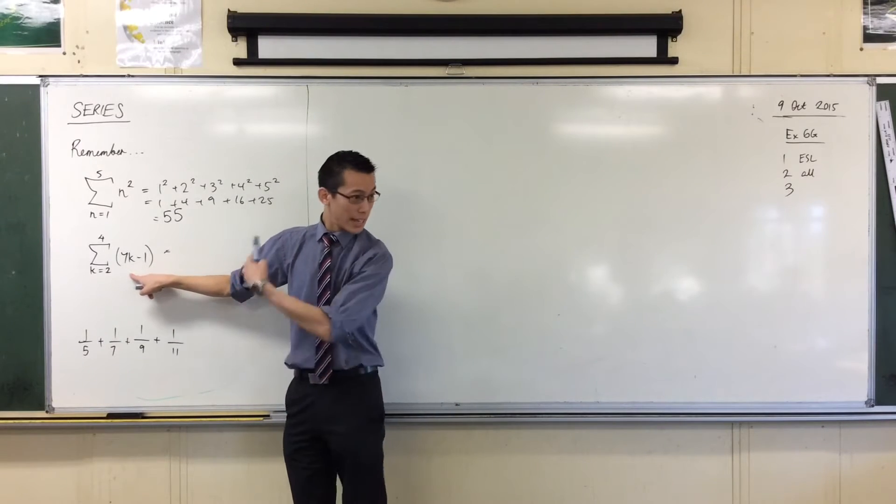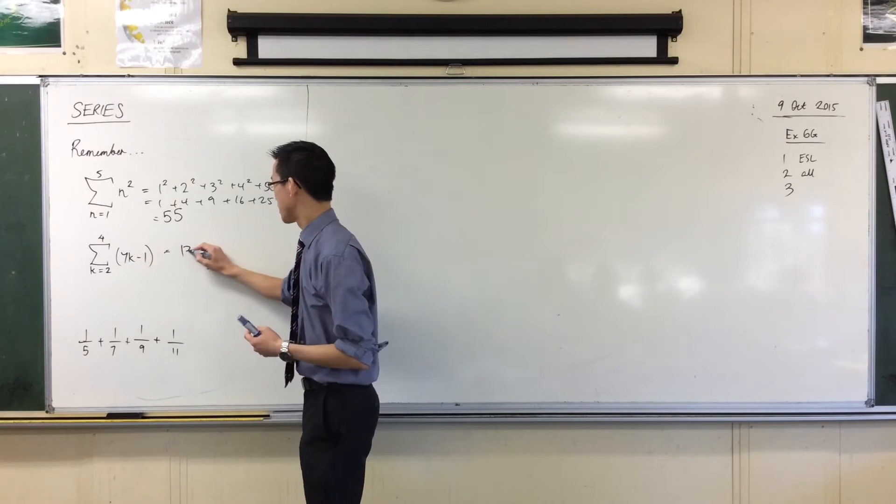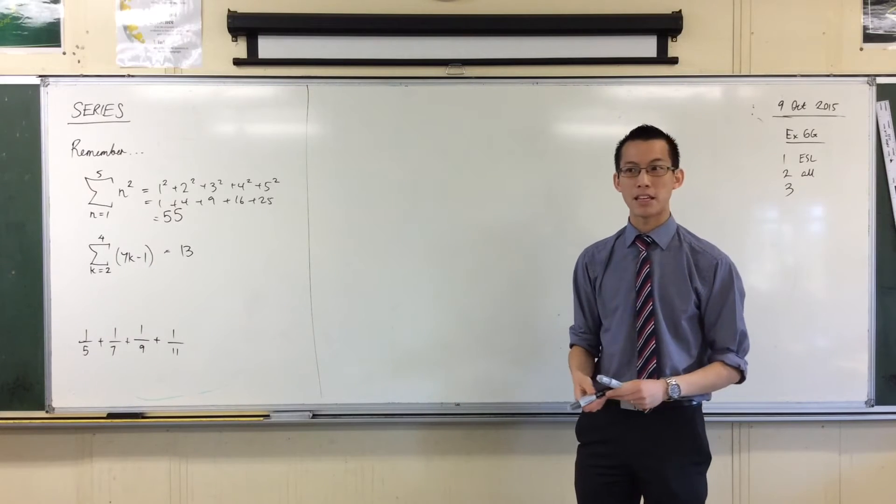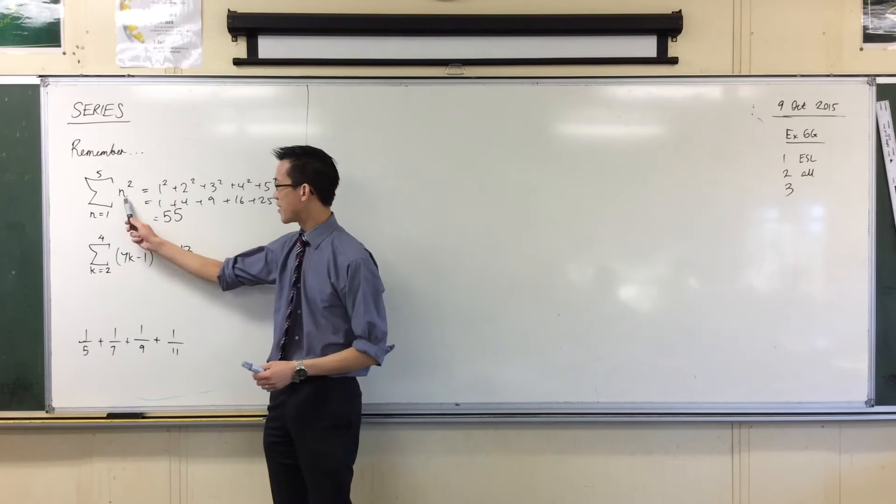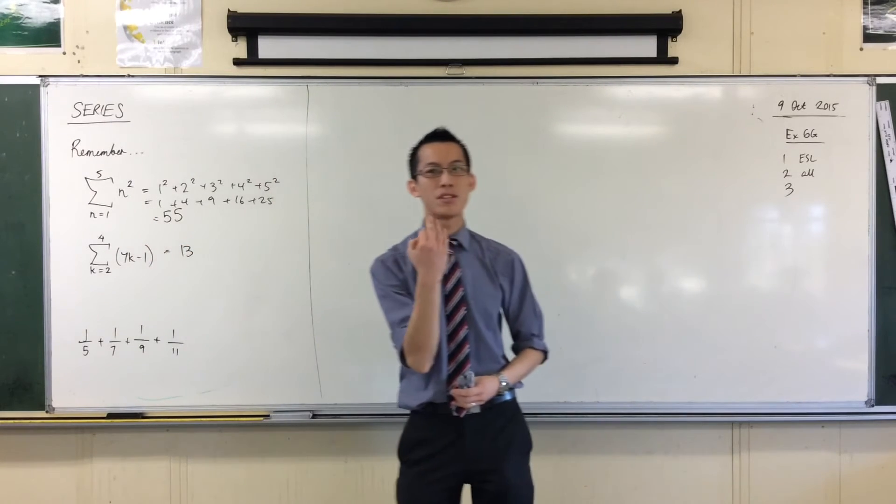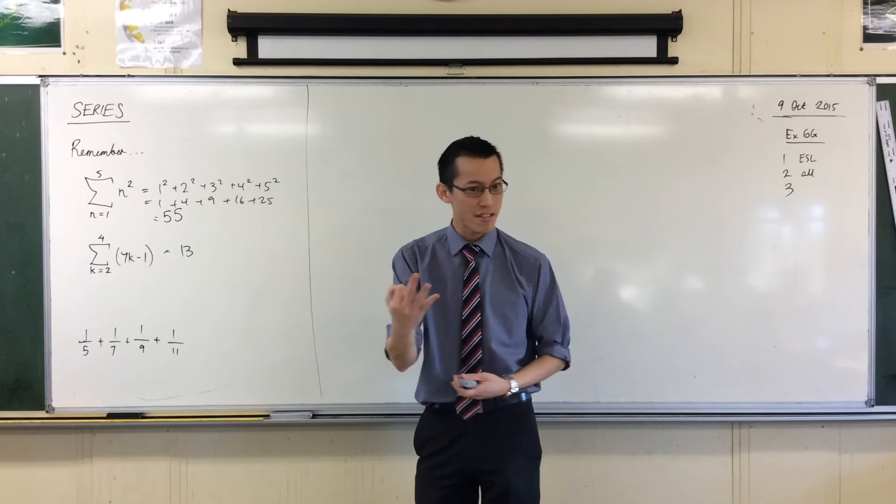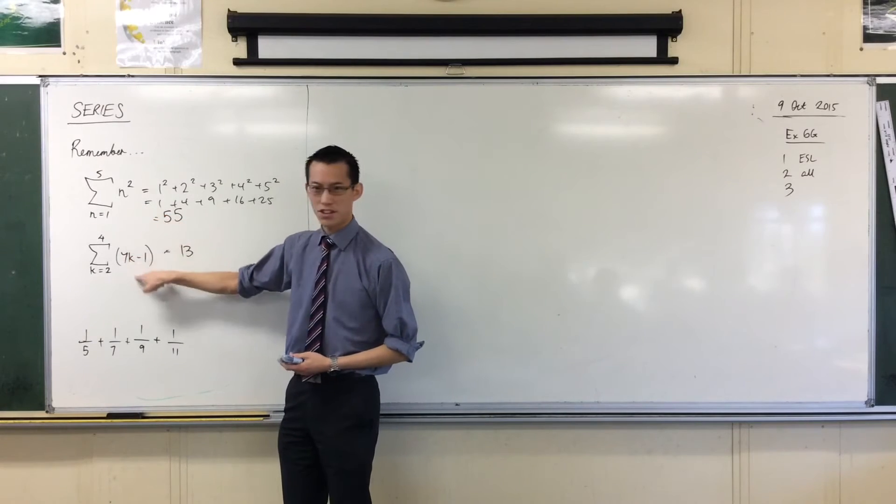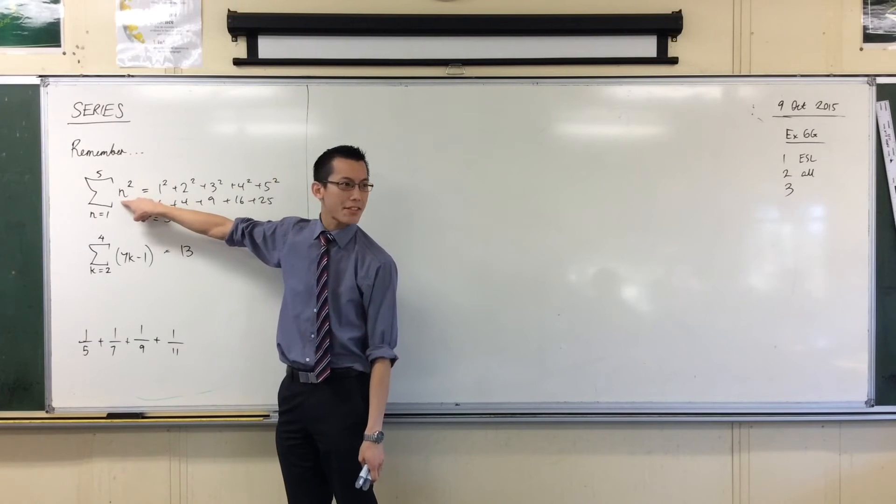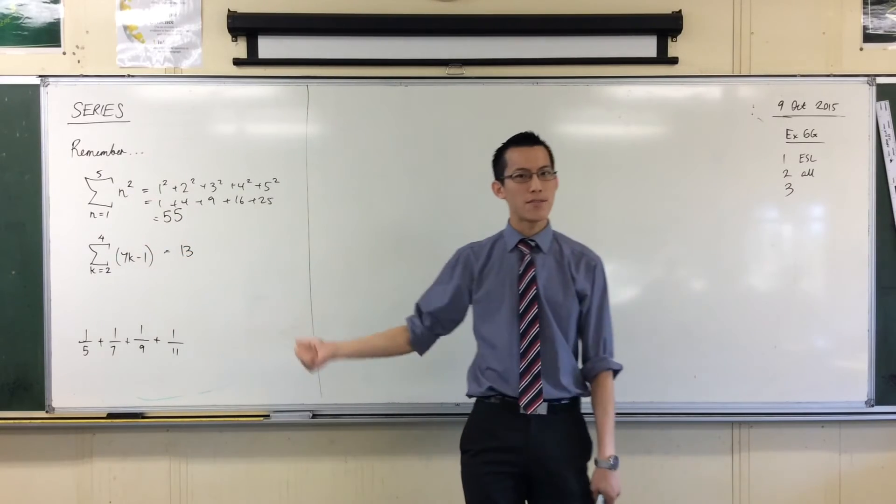If I start and I put in k equals 2 here, 7 times 2 minus 1, that's 13. Now, without actually evaluating it, you should be able to tell me what the next term is just by thinking of the pattern. Because, see how I said this is kind of like function notation? You remember I said there are three different ways that you can define a sequence, which kind of implies there are three different ways to define a series. So what you've got here is function notation. This is what the nth term looks like. This is t of n or t of k, whatever pronumeral we've got there. 7k minus 1.